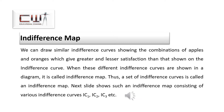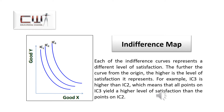The indifference map consists of various indifference curves represented as IC1, IC2, IC3, and so on. Each indifference curve represents a different level of satisfaction. The further the curve from the origin, the higher the level of satisfaction it represents. For example, IC3 is higher than IC2, meaning all points on IC3 yield higher satisfaction than points on IC2. However, we cannot say exactly how much utility the higher curve represents, as that would be cardinal measurement. Thus, aggregate utilities can be ranked but not measured.